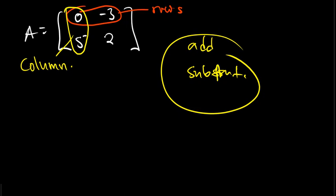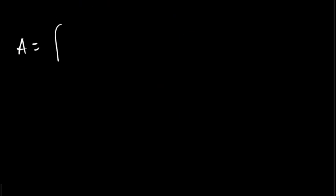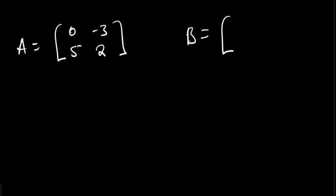Let's say we have 2 matrices. Matrix A — the same one which is 0, negative 3, 5, 2. And let's also say that we have matrix B which is 13, negative 4, 1, 5. So then we want to add A plus B.